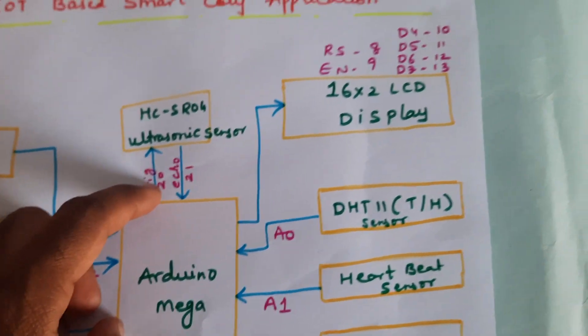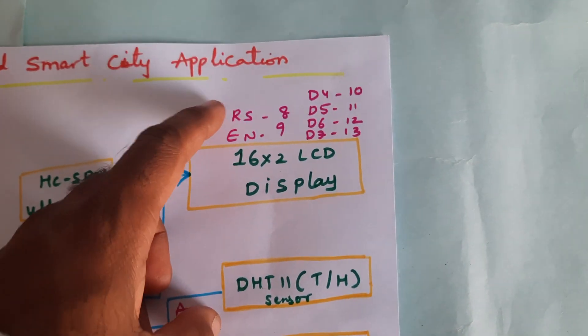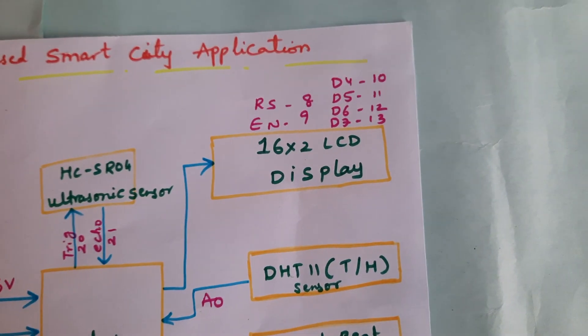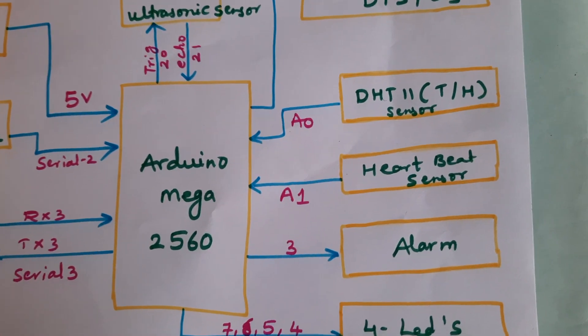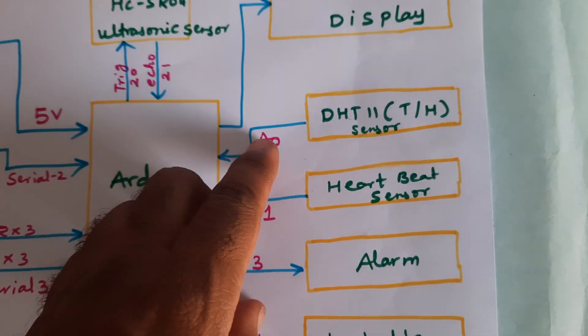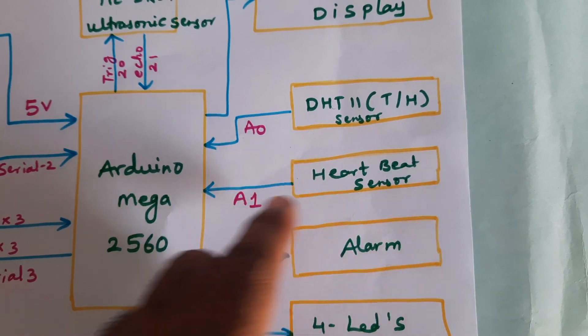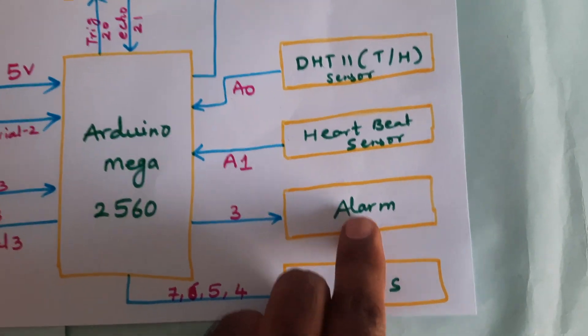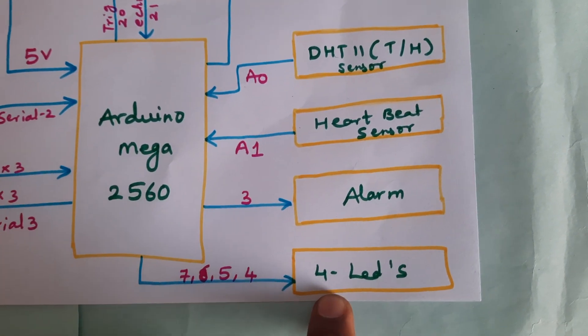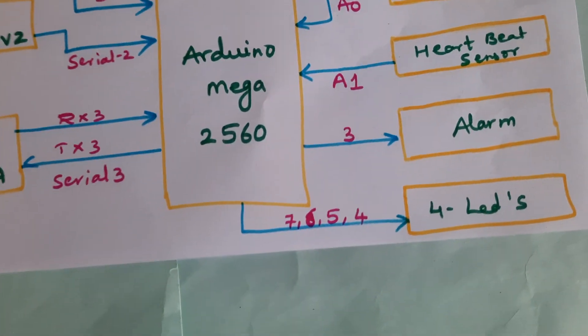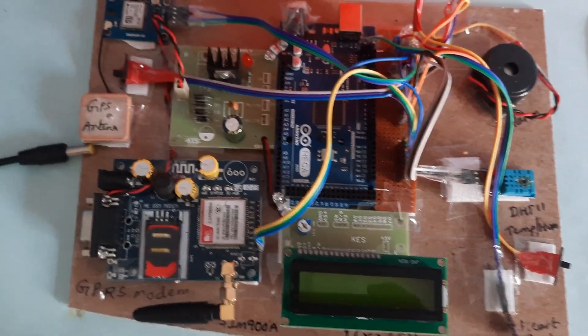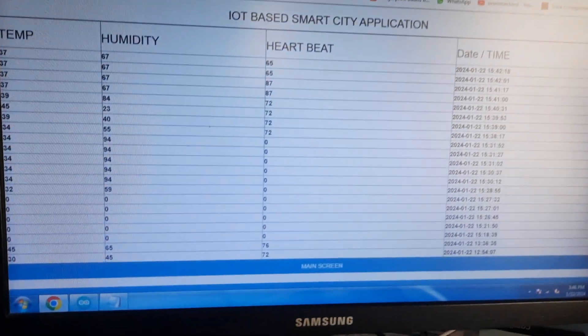RX3 and TX3 are connected to serial communication 3. The HC-SR04 ultrasonic distance measurement module is connected to pins 20 and 21. The 16x2 LCD display uses pins RS, EN, D4, D5, D6, D7 on pins 8 through 13. The DHT11 temperature and humidity sensor is connected to A0, the heartbeat sensor to A1, the alarm to pin 3, and four LEDs for levels — low empty, low, mid, and full — on pins 4, 5, 6, and 7.